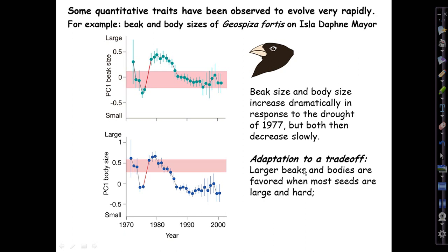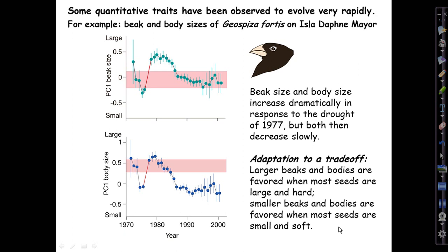It was classic ecological adaptation to a trade-off. Larger birds with larger beaks were able to handle the larger, harder seeds that remained available after all the favored small, soft seeds had been eaten up. Since the plants weren't making more seeds during the drought, the birds had to turn to other species' seeds, strongly favoring bigger birds with bigger beaks. After normal weather returned, over a couple of decades, beak and body sizes gradually relaxed back toward the range the Grants had observed when they first arrived on the island.